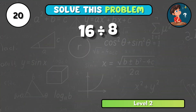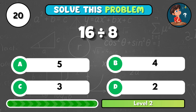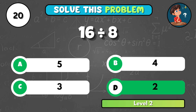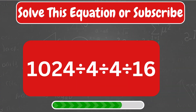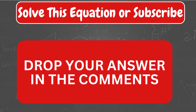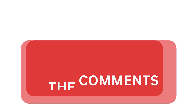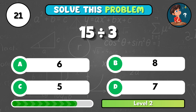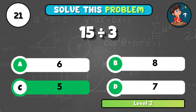Next up, sixteen divided by eight — what's the result? That equals D, two. What's tougher, solving this equation or resisting the subscribe button? Comment your choice below. Here's one more: fifteen divided by three is how much? That's C, five.